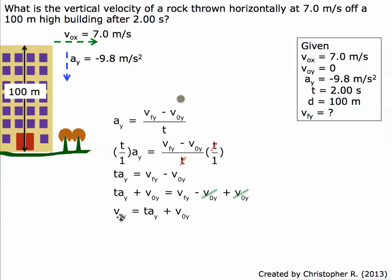So we have vfy, the final velocity in the y direction, equals ta plus v0y, the initial velocity in the y direction. Now we'll plug in our numbers.